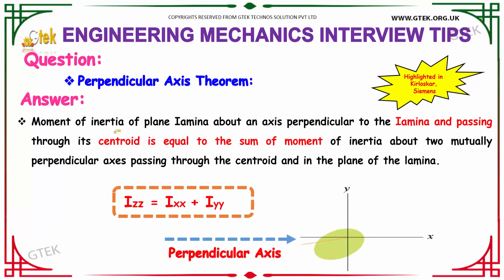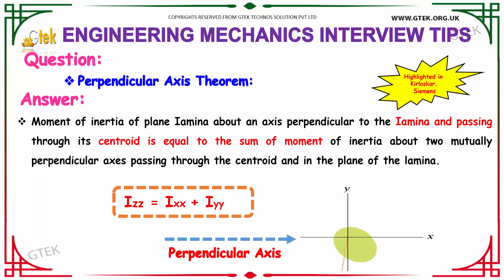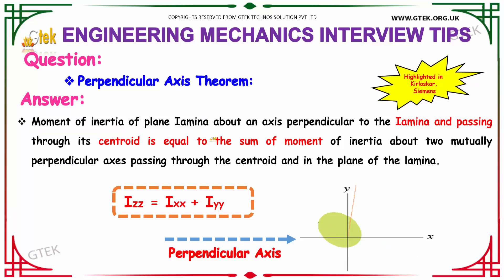The next question is about the perpendicular axis theorem. According to the perpendicular axis theorem, the moment of inertia of a plane lamina about an axis perpendicular to the lamina and passing through its centroid is equal to the sum of the moments of inertia about two mutually perpendicular axes passing through the centroid and in the plane of the lamina. The perpendicular axis theorem is given as: Izz = Ixx + Iyy, where I represents the moment of inertia of a plane lamina, and Z, X, and Y refer to the Z-axis, X-axis, and Y-axis respectively.